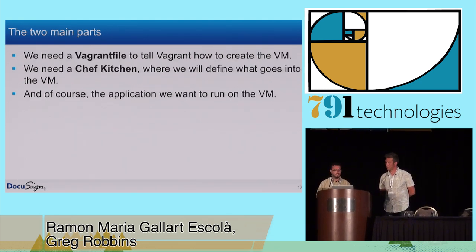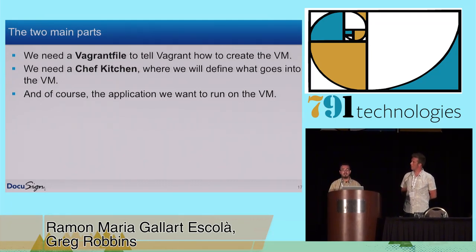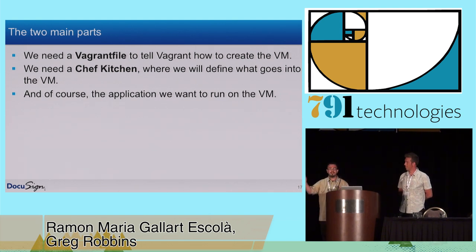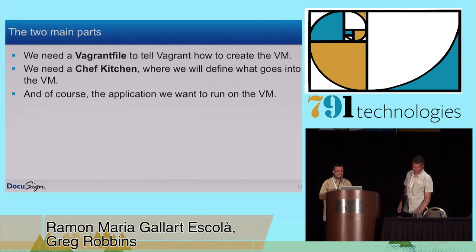What are the two main parts implied when creating a virtual machine? We need the Vagrantfile — the file that is created by Vagrant when you initialize it, and it will tell Vagrant how to create the virtual machine. And we need the Chef Kitchen — the Chef Kitchen will say what software we need to get installed into the virtual machine. And of course, the application we want to run.